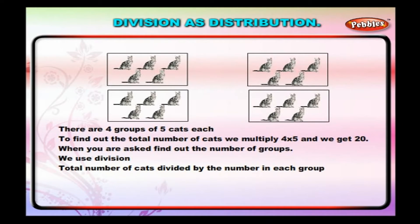Total number of cats divided by the number in each group. That is, 20 divided by 5, we get the answer as 4 groups.